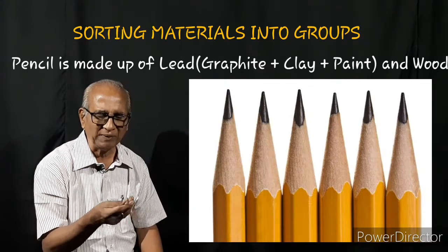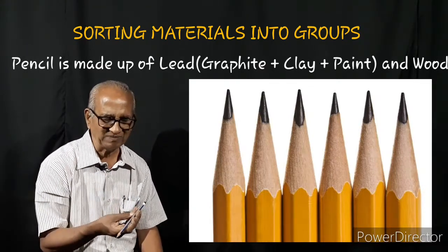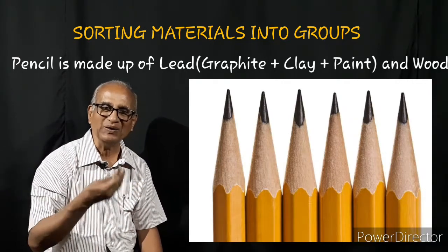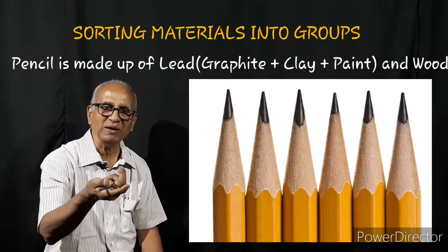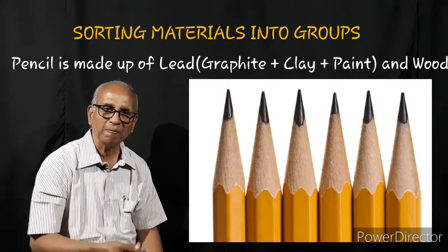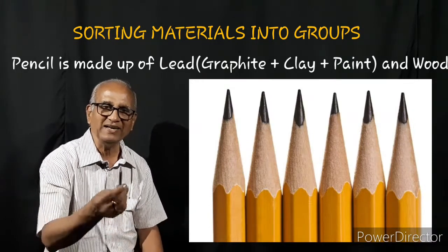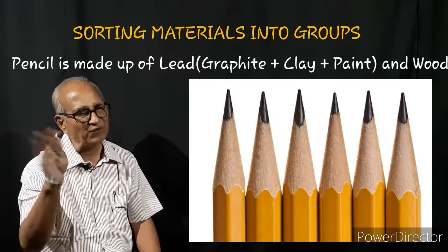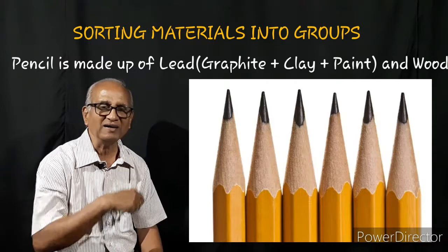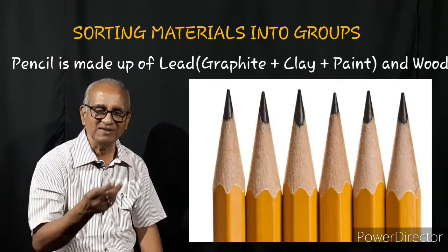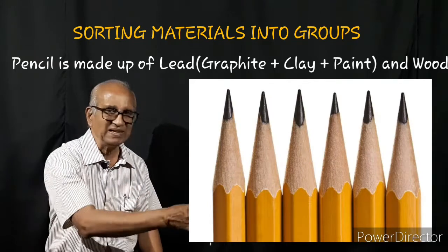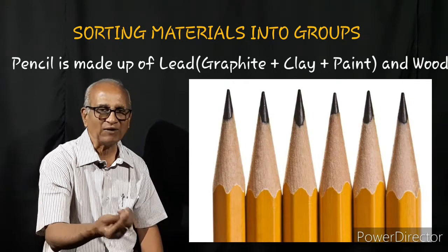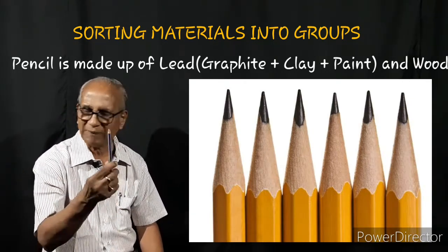On the outside of the pencil, to make it look attractive, we have paint — it's been painted. See how many items got together. We say graphite, or in ordinary language we say 'lead.' We say 'the lead is broken,' but actually it's not lead that is broken — lead is a different element altogether. Lead is hard; lead won't break like that. This is graphite. The moment the pencil gets dropped, usually the graphite will get broken. So this is what a pencil is made of.